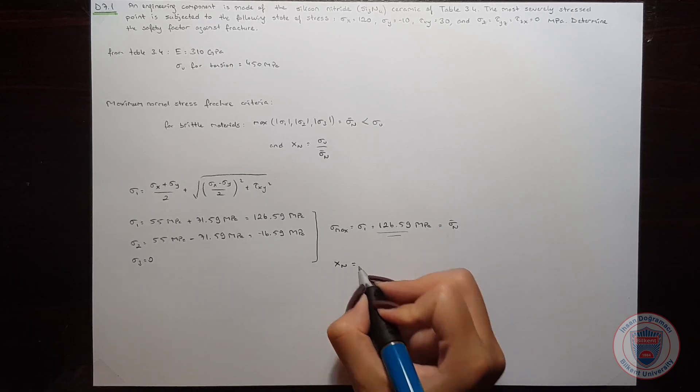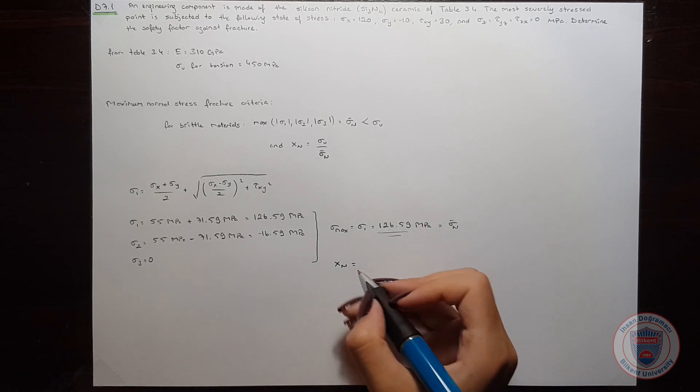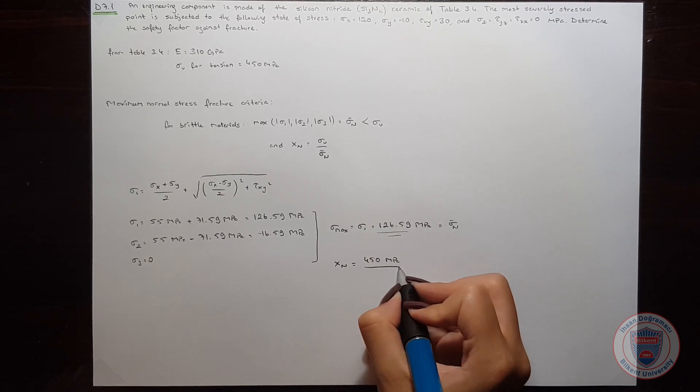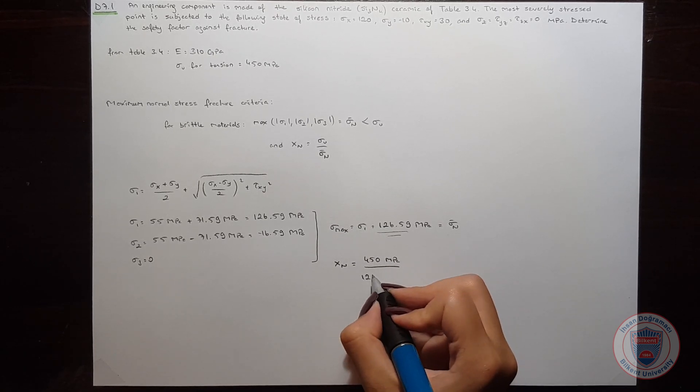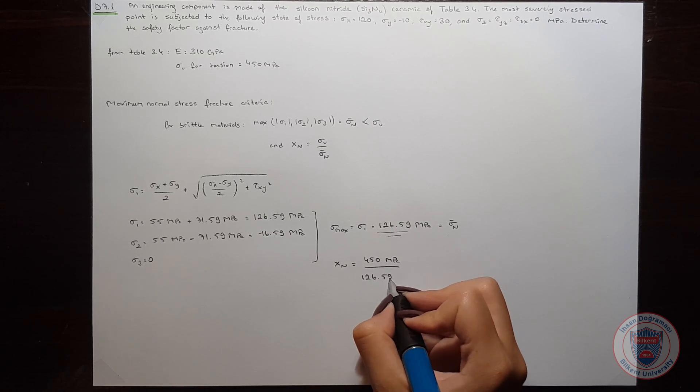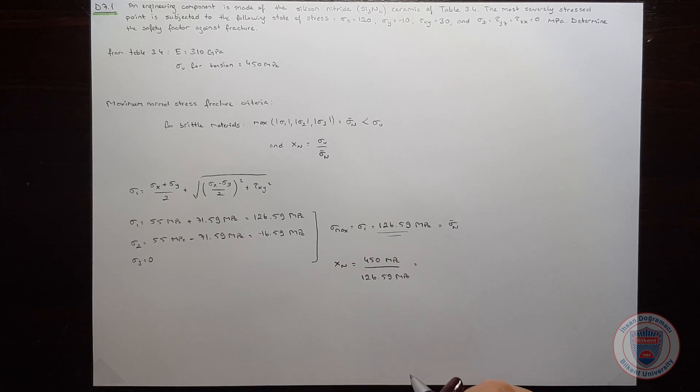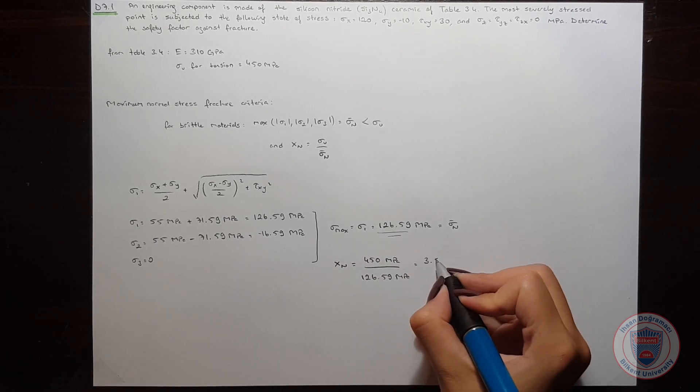So our safety factor will be 450 MPa over 126.59 MPa, and it will give a safety factor against fracture which is equal to 3.55.